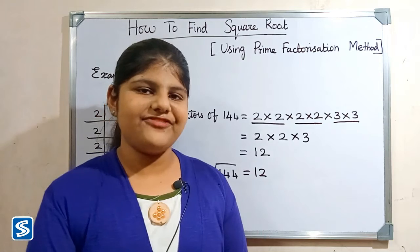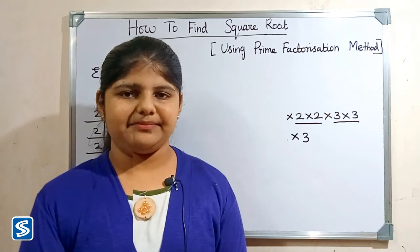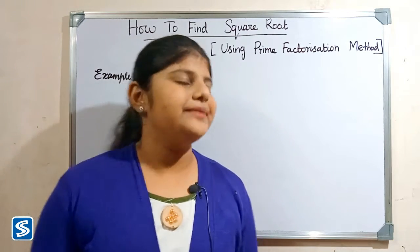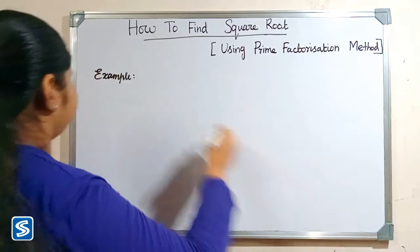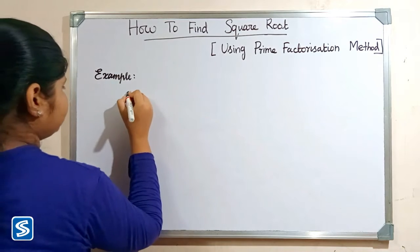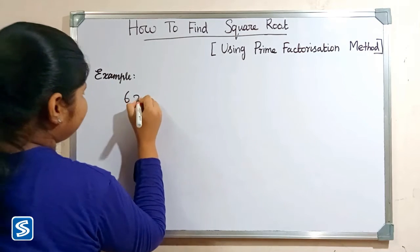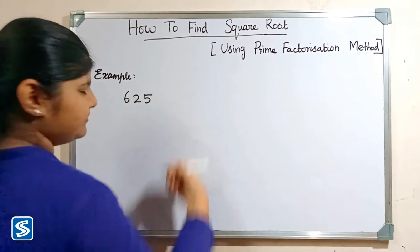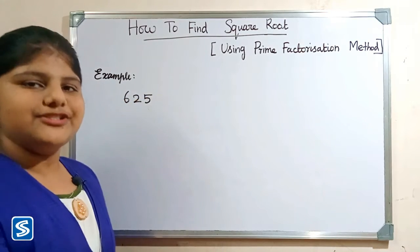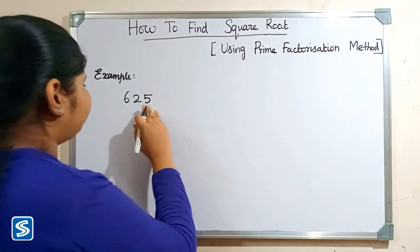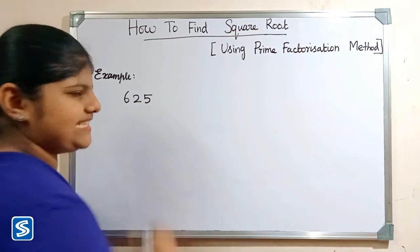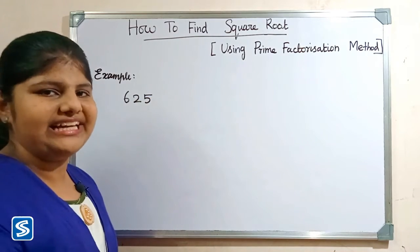Next we will take one more example. For example, we can take 625. So first we have to find the factors of 625.